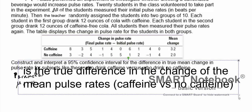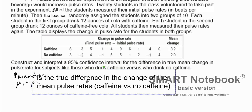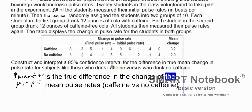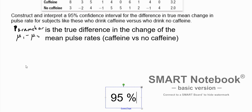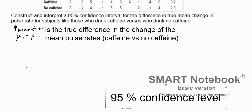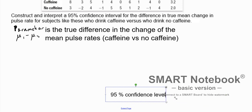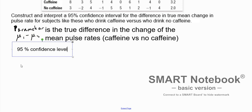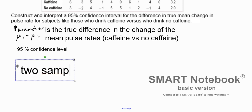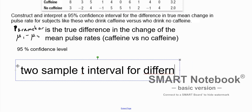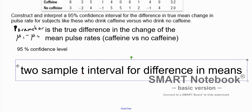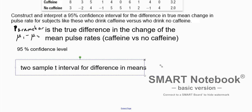We're going to talk about a significance level. Since we want a 95% confidence interval, we're going to state a 95% confidence level. Now we're going to perform a two-sample t-interval for the difference in means, mean one minus mean two. And now we're going to test our conditions.